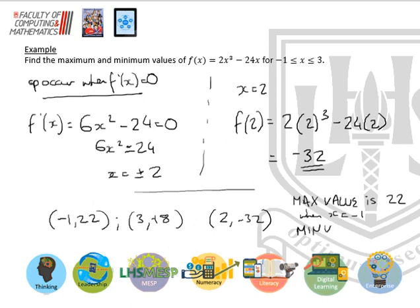Your minimum value is minus 32 when x equals 2. So that's your communication at the end, comparing these y values.